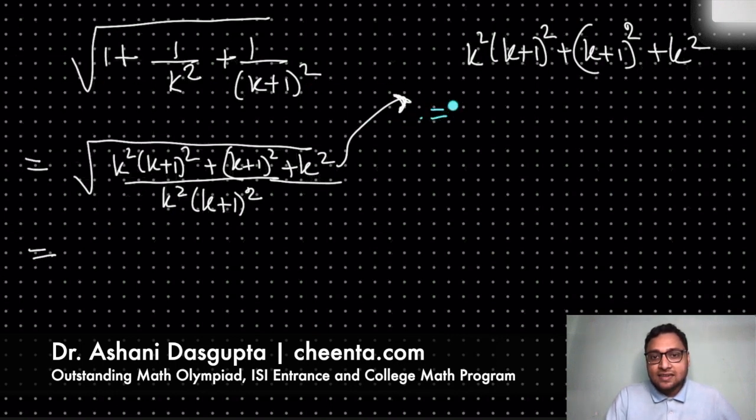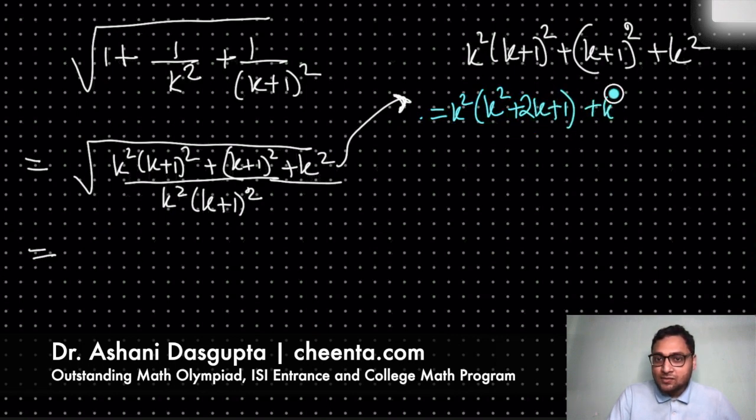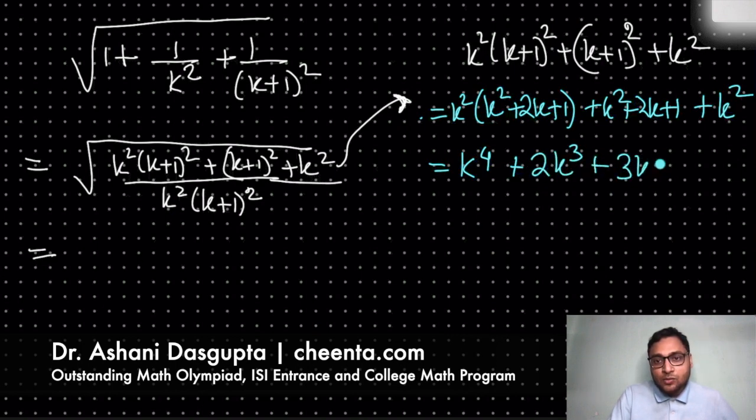This is k squared times (k squared plus 2k plus 1) plus (k squared plus 2k plus 1) plus k squared. So this becomes k to the power 4 plus 2k cubed plus 3k squared plus 2k plus 1.